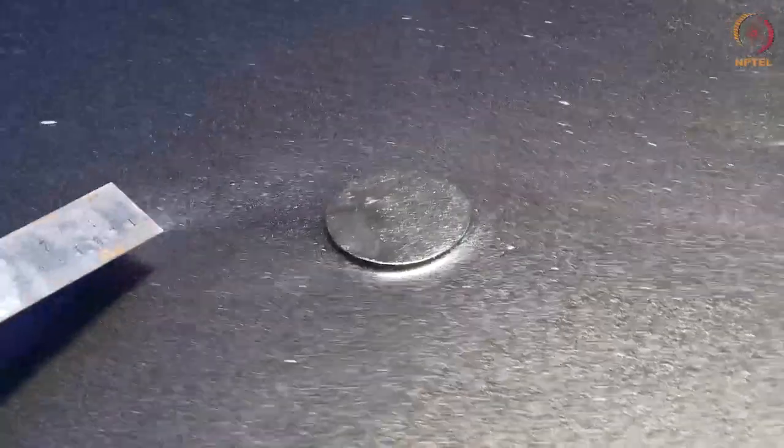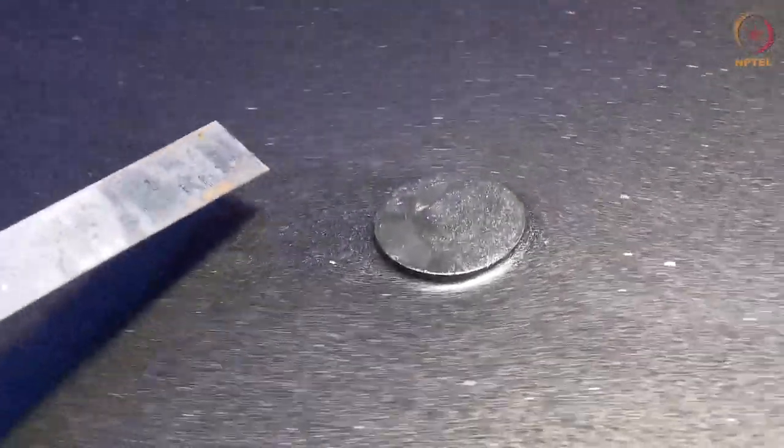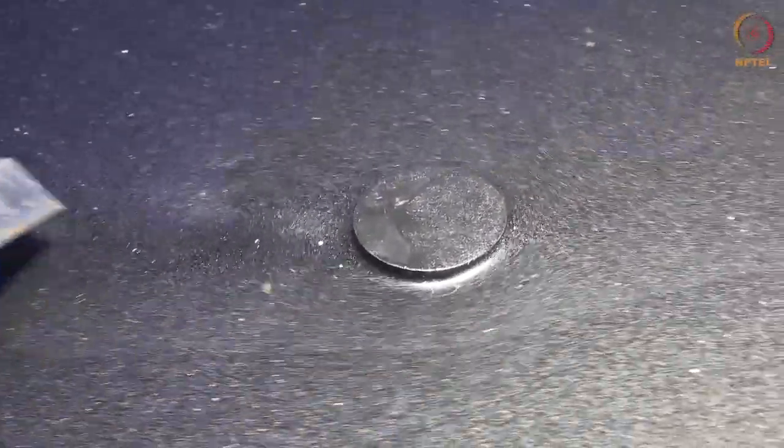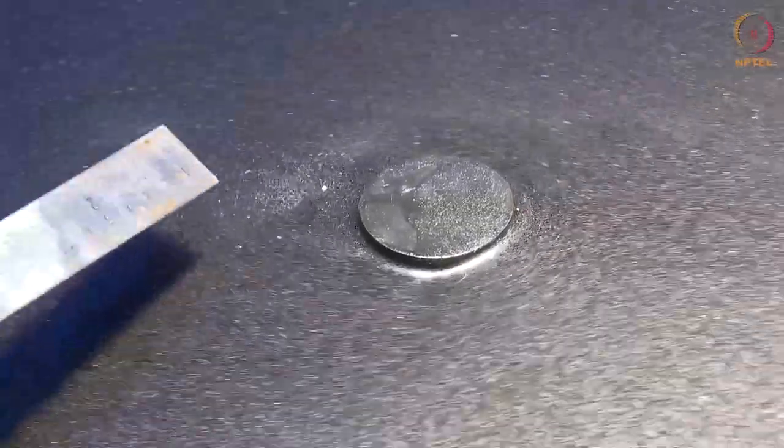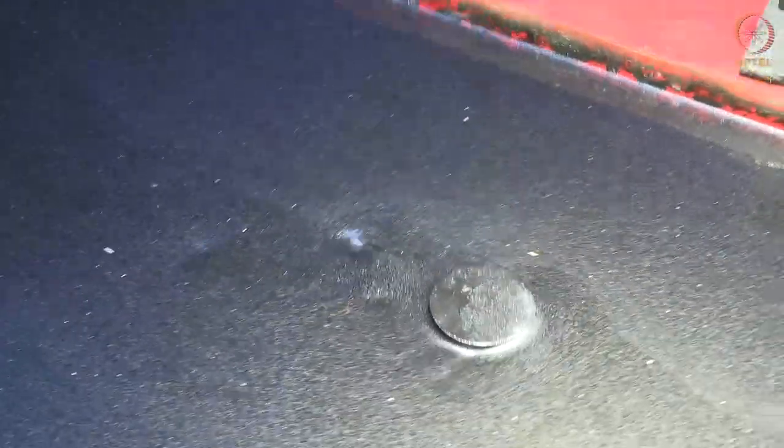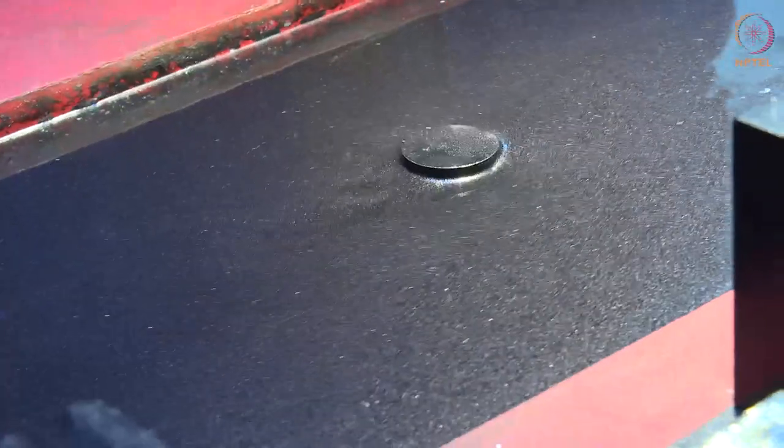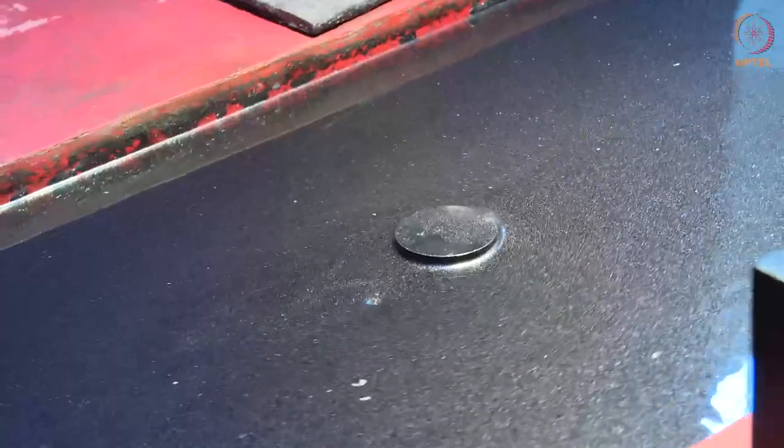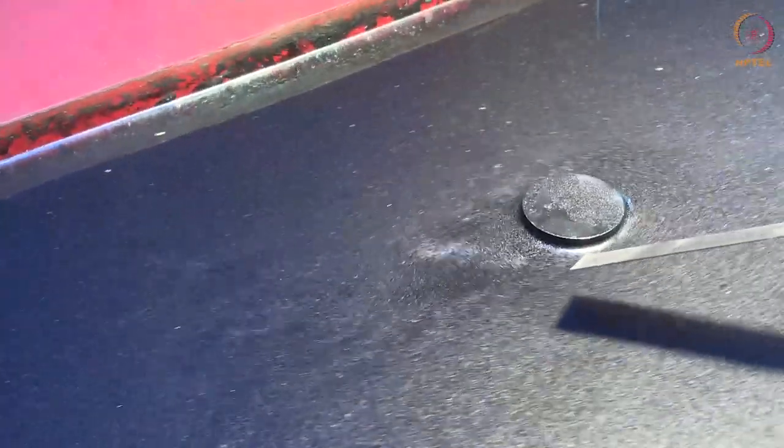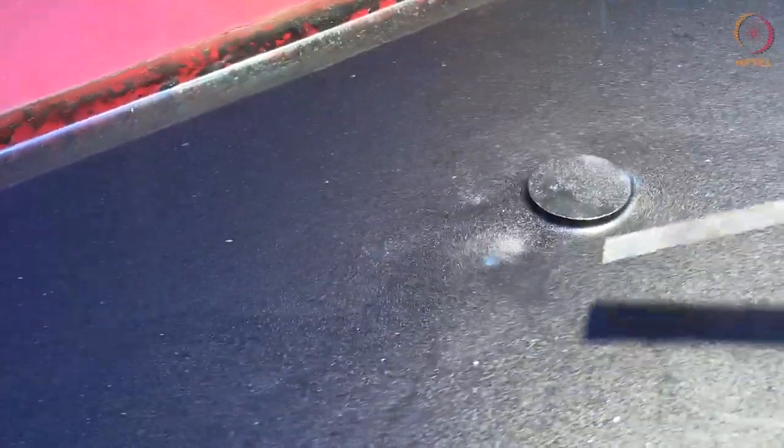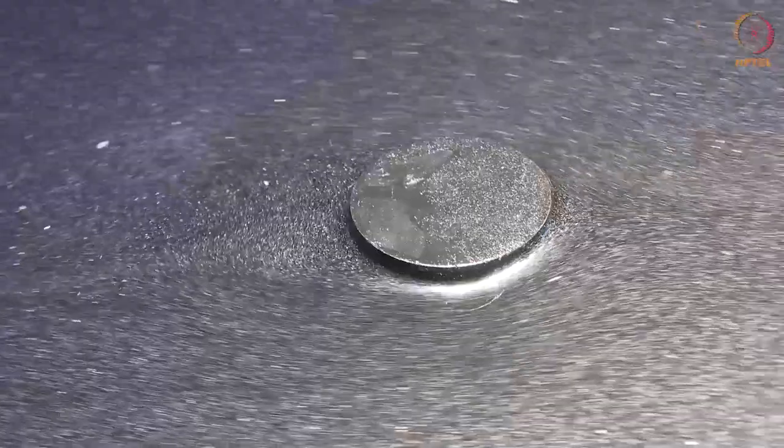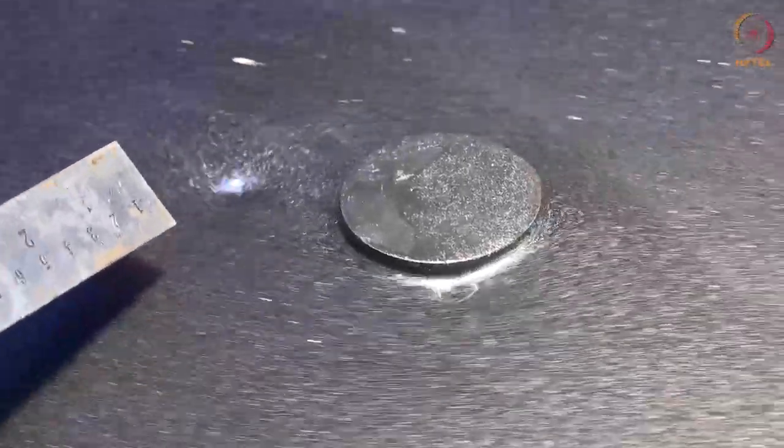You can observe the vortices that are formed here and it is breaking off and moving down the line. Now we have to determine the frequency of this vortex that is being shed. We have to count the number of vortices that are forming in a definite interval of time. The count divided by the time will give us the frequency of the vortex shedding.